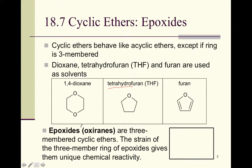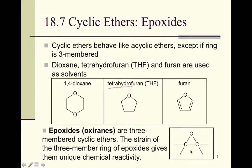Epoxanes, also known as oxiranes, are three-membered cyclic ethers. We can have more carbons coming off either side — the oxyrane piece is the two carbons and the oxygen that form the three-membered ring. The reason epoxides are much more reactive than other ethers is because of angle strain. The typical preferred angle is 109.5 degrees tetrahedral, but epoxides have 60-degree angles — far from that — which gives them their unusual chemical reactivity.